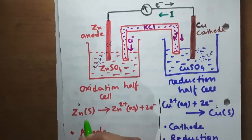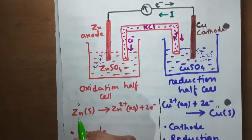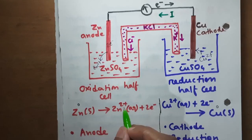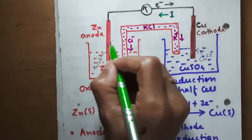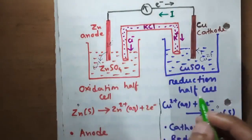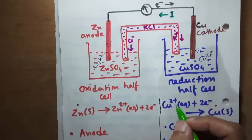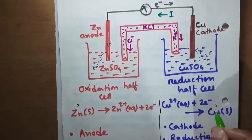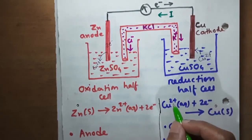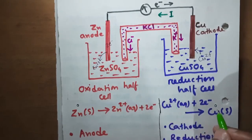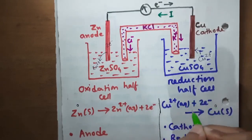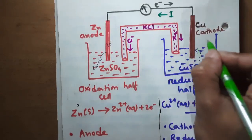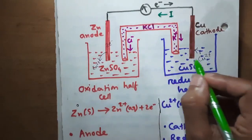On the left-hand side, there is an increase in oxidation number from 0 to plus 2 for zinc, so this is oxidation and this half cell is called the oxidation half cell. On the right-hand side, copper changes from plus 2 to 0 state, so the oxidation number is decreasing, making this a reduction reaction, and therefore this half cell is known as the reduction half cell.